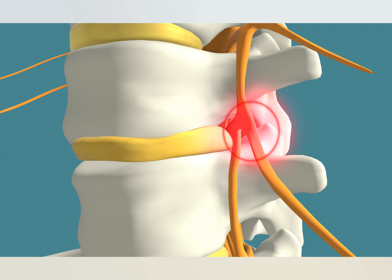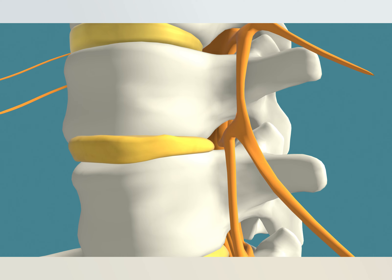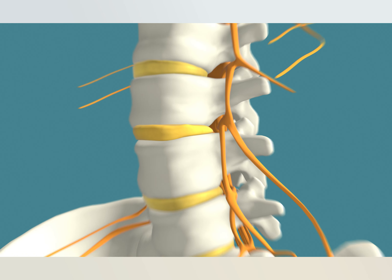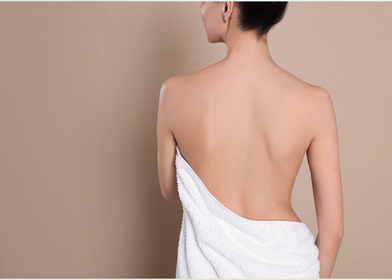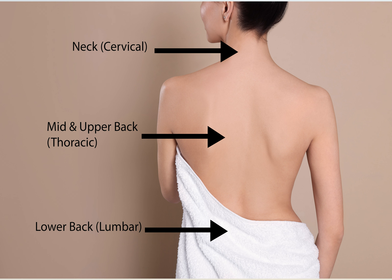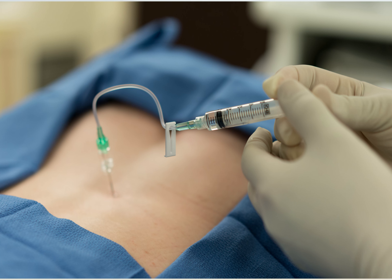Radiculopathy can also be caused by facet hypertrophy, where the inflammation causes the facet joints to swell, pinching the nerve root. Radiculopathy often happens in the lower back or the lumbar area of the spine, but can happen in the mid and upper back — the thoracic area — or neck, the cervical area.